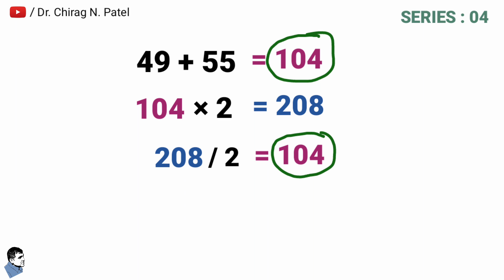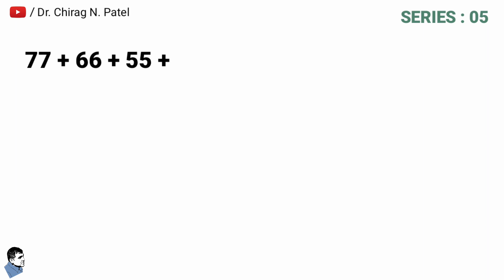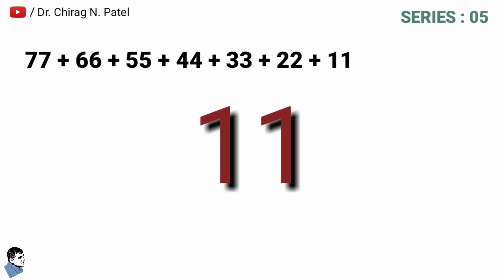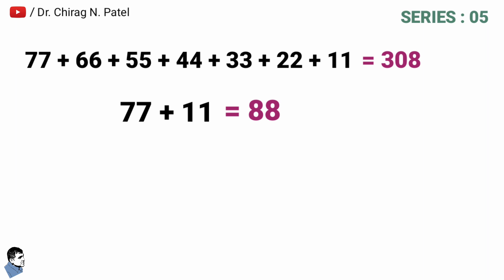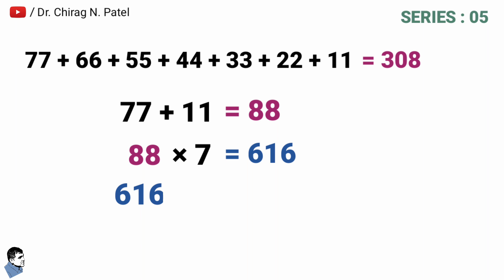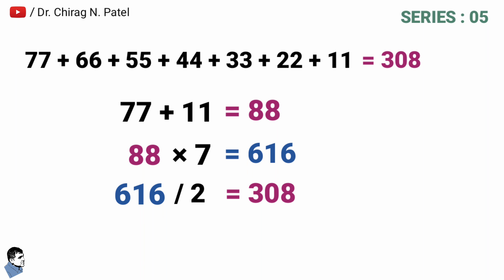This also works when numbers are in reverse order. Take 77 + 66 + 55 + 44 + 33 + 22 + 11, with a common difference of 11. The calculator gives 308. Using the math trick: add the first and last terms — 77 + 11 = 88. Multiply by the total count of 7: 88 × 7 = 616. Divide by 2: 616 ÷ 2 = 308 — which matches the calculated answer.